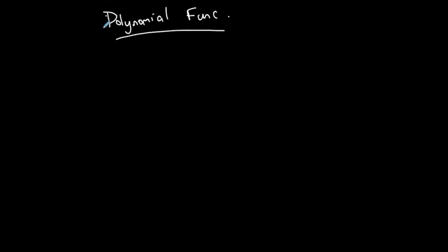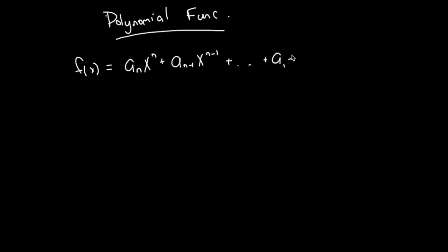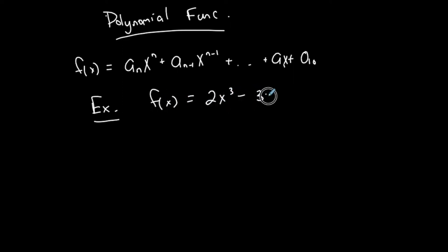Polynomial functions follow the form: a_n times x to the n, plus a_(n-1) times x to the n minus 1, all the way down to a_1 times x, plus a_0. You have a function separated by different terms. The coefficients of these terms are numbers, and the exponents must be whole numbers. For example, f(x) equals 2x cubed minus 3x squared plus 4.